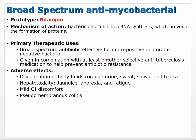Adverse effects of rifampin are interesting. Discoloration of body fluids occurs — orange urine, orange sweat, saliva, and tears — because the drug is pigmented and passes that pigment onto body fluids. Hepatotoxicity can cause jaundice, anorexia, and fatigue. Mild GI discomfort can occur, and pseudomembranous colitis — usually associated with C. diff — which is inflammation of the intestinal colon.